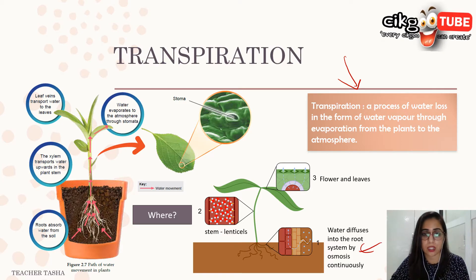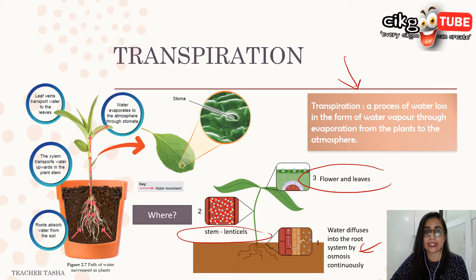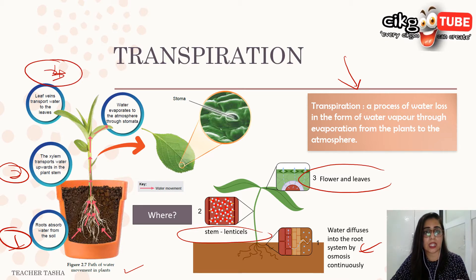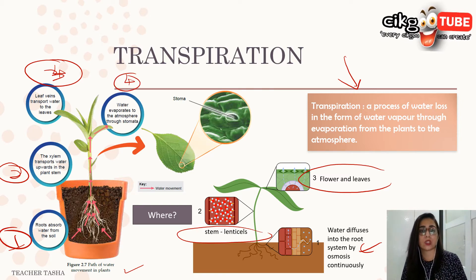Water also moves through the stem via lenticels, and through the flowers and leaves. Looking at the pathway of water movement in plants: number one, roots absorb water from the soil; number two, xylem transports water upwards through the stem; number three, leaf veins transport water to the leaves.